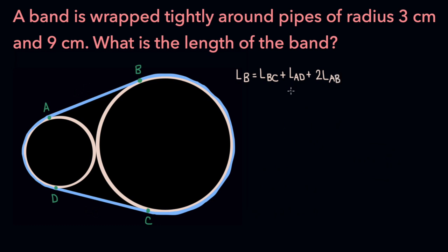BC and AD are arcs, which are portions of the circle circumference. To find the length of the arcs, we need the circumference of the circles, which we can find because we have the radii, but we also need the angle measure of the arc. And to find the angle measure of the arc, we're first going to need to find the length of AB. So let's start with that.